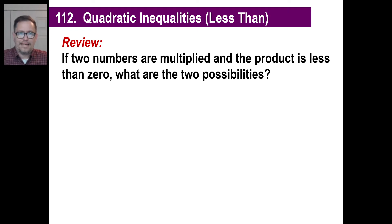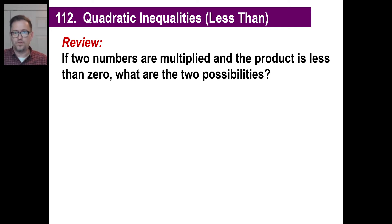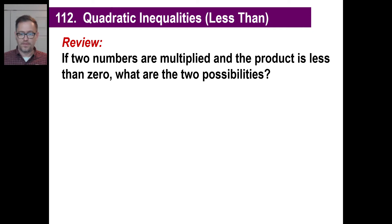Hey guys, let's take a look at quadratic inequalities — this time we're going to do less than. Now before we did inequalities, we graphed them, where we said we're going to graph the two number sets that are going to be greater than zero. We went back and said, what two numbers multiplied together are going to give us greater than zero — in other words, positive? We said they're either going to be both negative or both positive. We graphed those and figured out the answers.